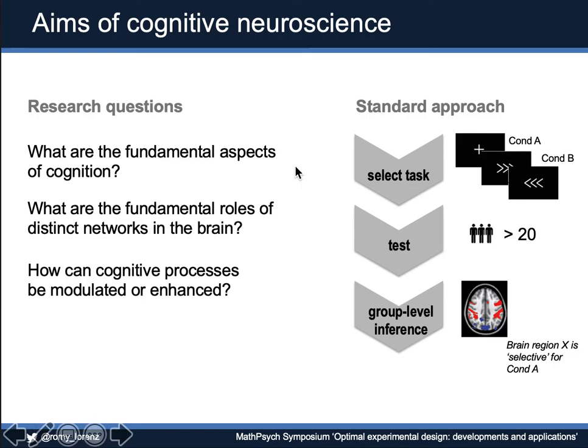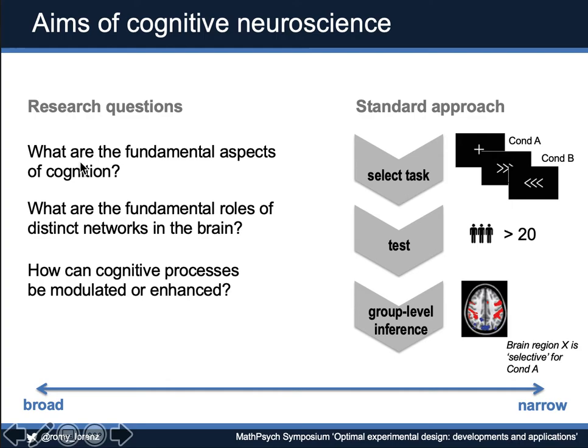And then we test this on a cohort of subjects and draw a group-level inference. I argue, though, that there is quite a discrepancy between the kind of broad research questions we're interested in and the narrow standard approach we commonly take. And I think this has led to a lot of problematic developments in the field.